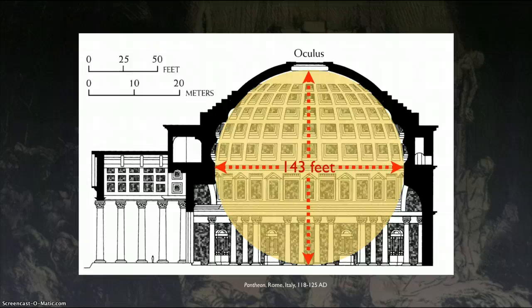Now let's look at the size. The dome is 143 feet wide, and in its cylinder it is also 143 feet tall — exactly the same height as its width. So you can place a perfect sphere inside it. The theory is that it's designed this way because the sphere is the most perfect shape — a circle that is unending in every direction. It really is a perfect building in the eyes of many architects.